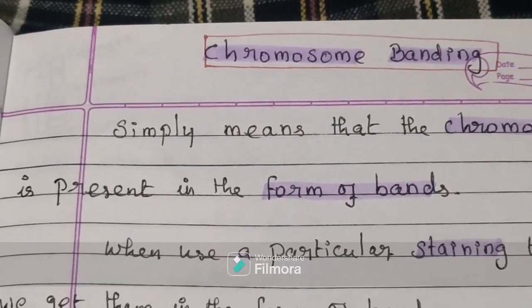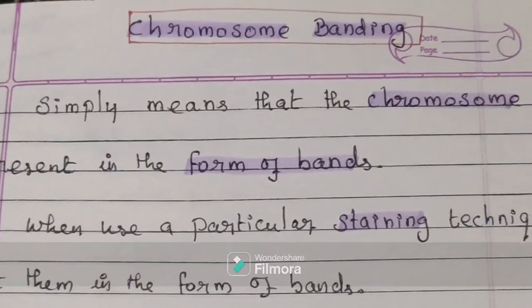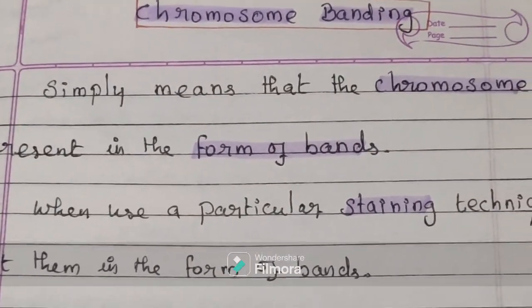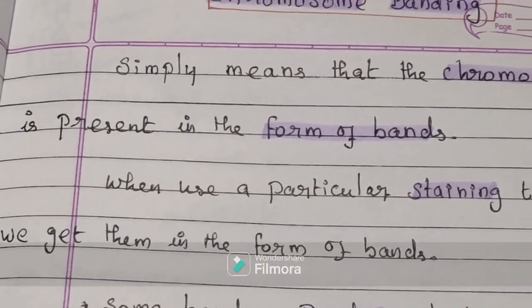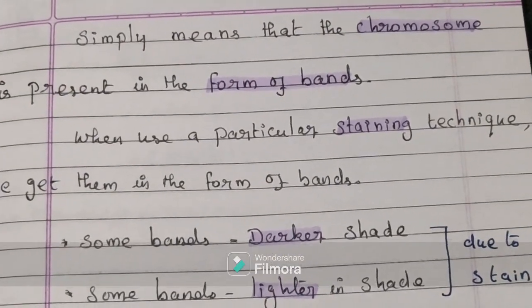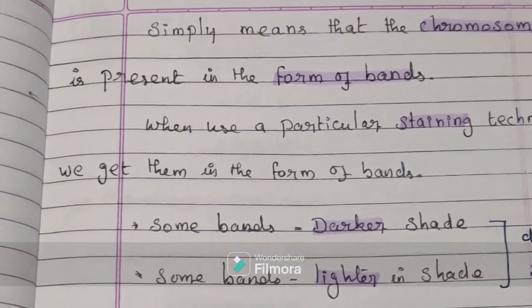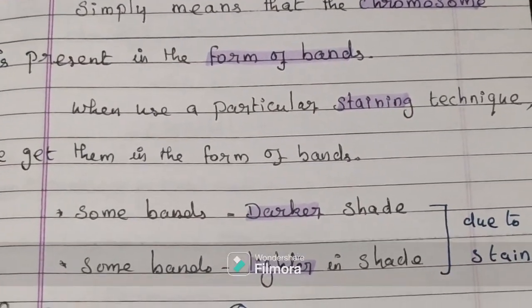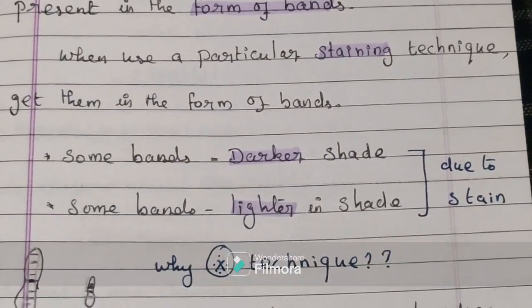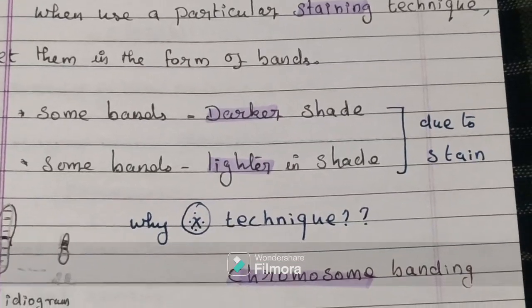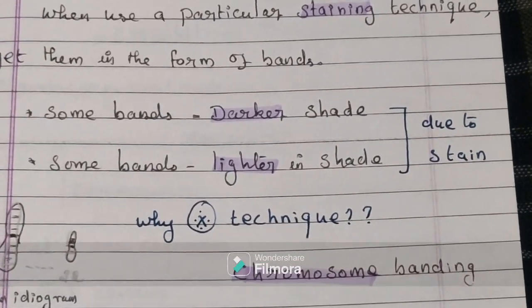Today's topic of discussion is chromosome banding. What is chromosome banding? Chromosome banding simply means that the chromosome is present in the form of bands. When we use a particular staining technique, we get chromosomes in the form of bands.